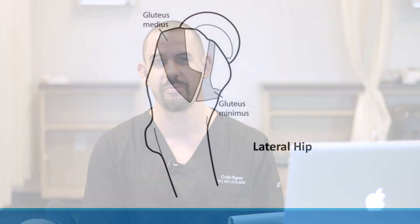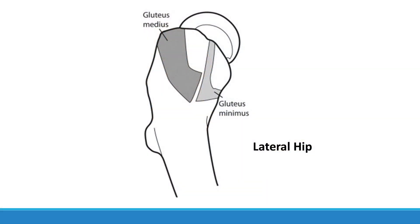The lateral hip, the gluteus minimus, the gluteus medius, the iliotibial band, and the greater trochanteric bursa are the main structures we're going to identify.